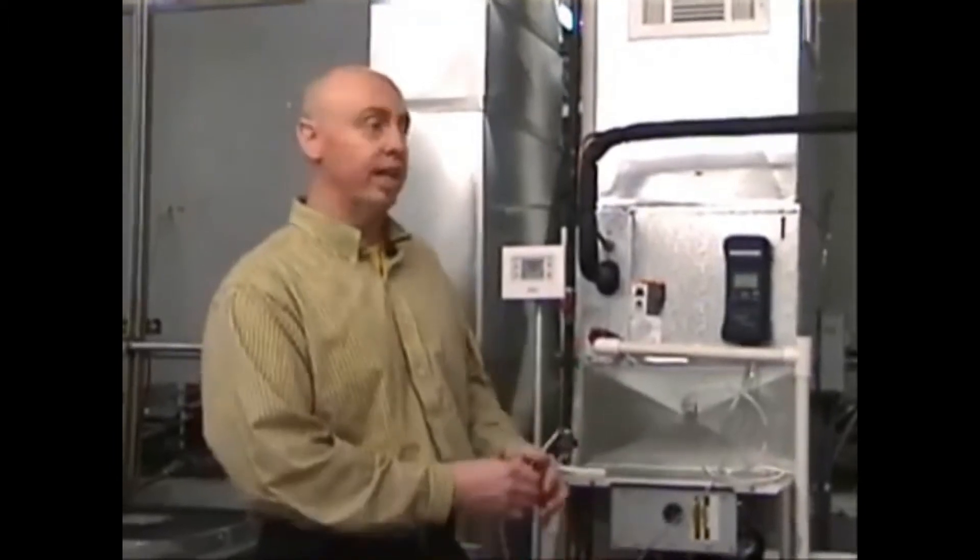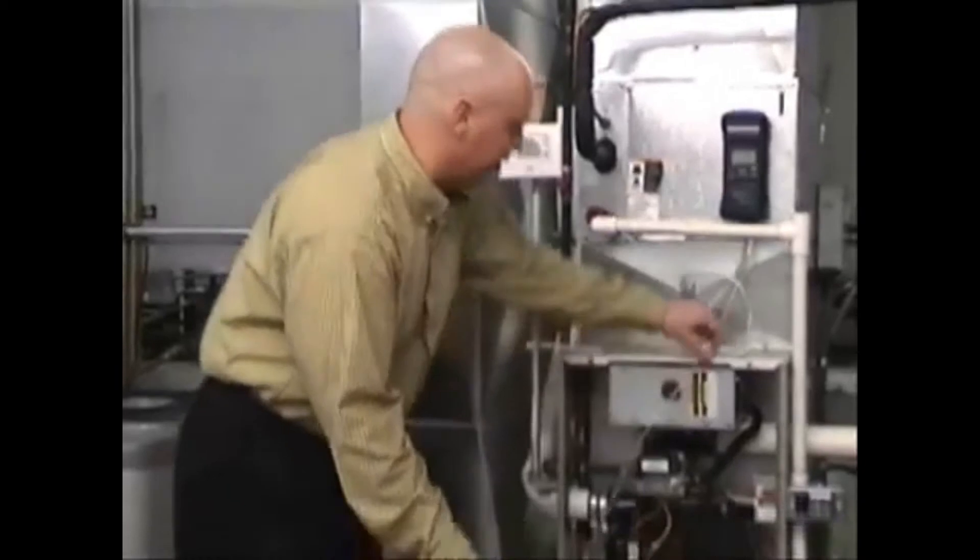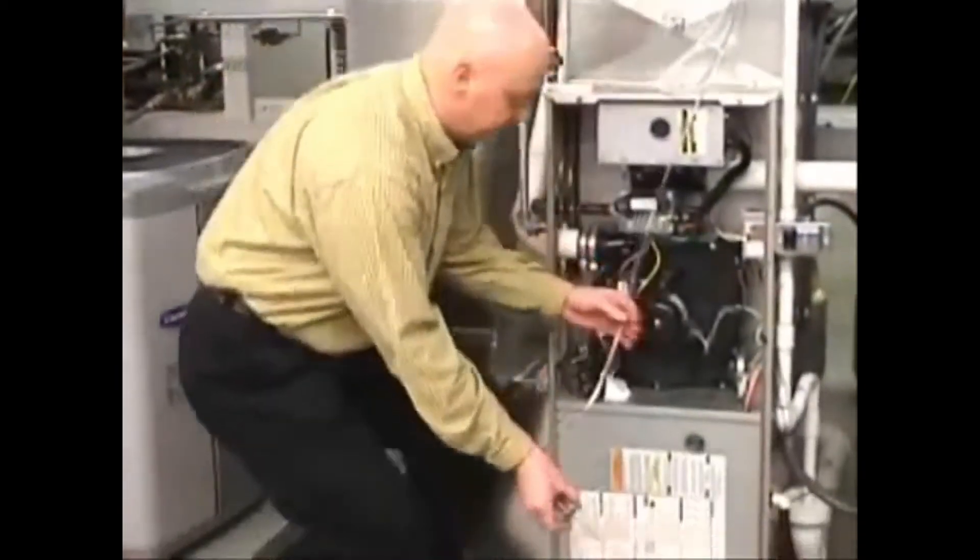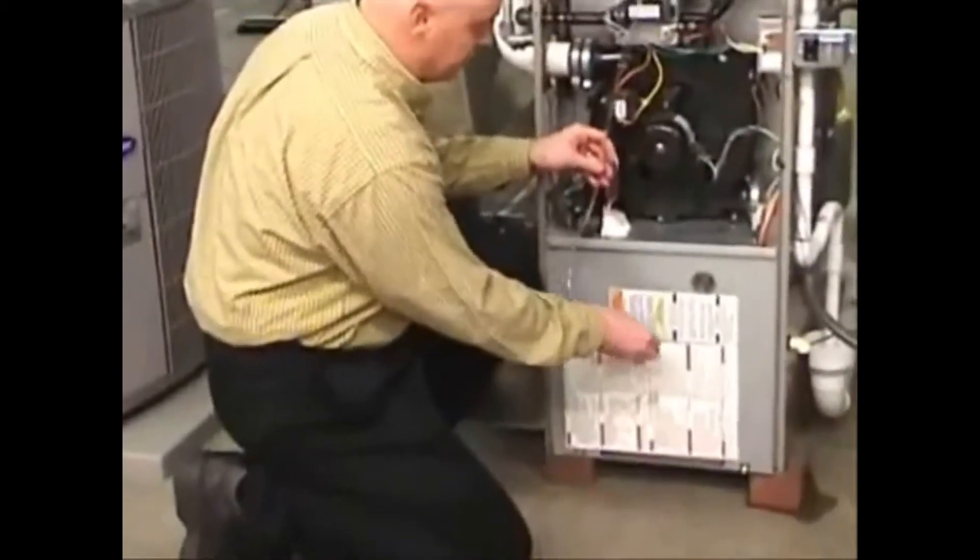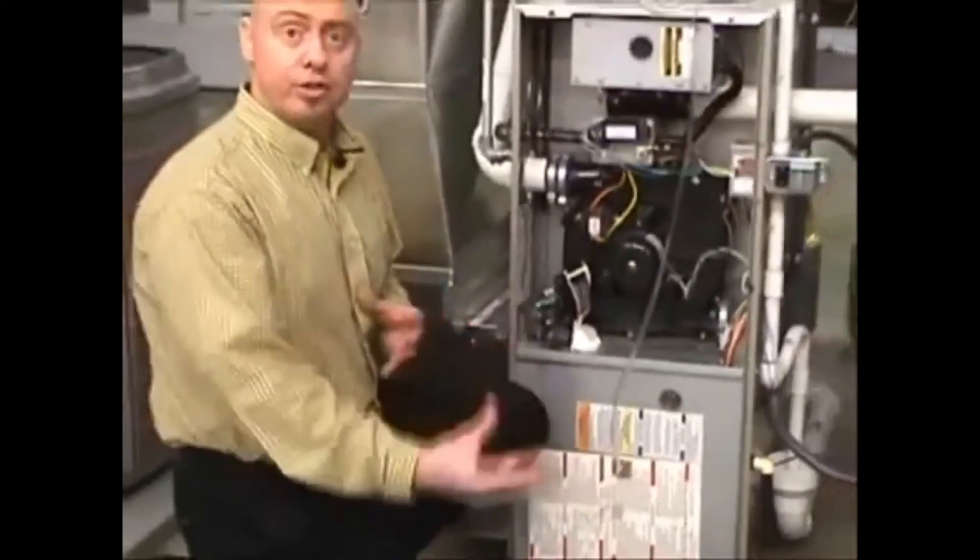The second reading we need is on the return side. And the same thing is we want to take this probe and we bring it down here. I'm going to use the blower door section right here. So when I put that in, the second reading, this is a negative reading because it is on the return side, it is the suction side.